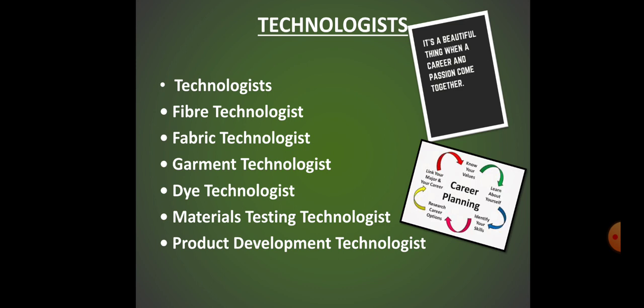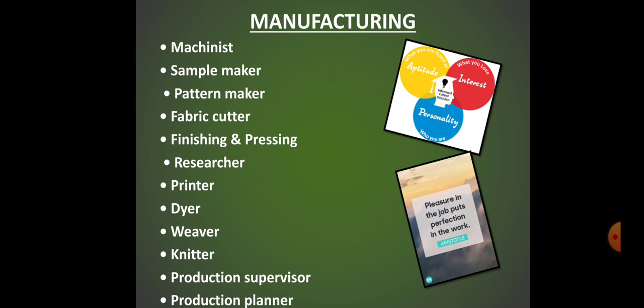Manufacturing unit roles include: Finishing and Pressing, Researcher, Printer, Dyer, Weaver, Knitter, Production Supervisor and Production Planner.